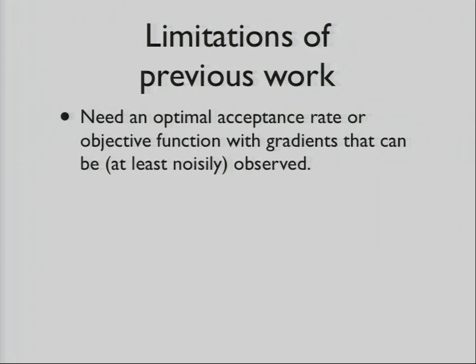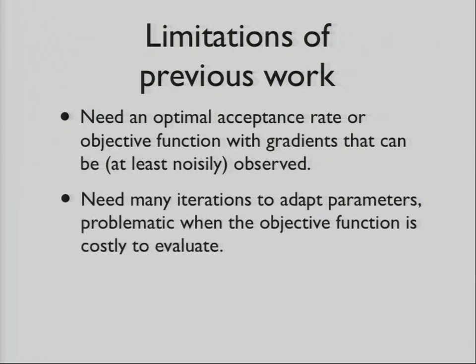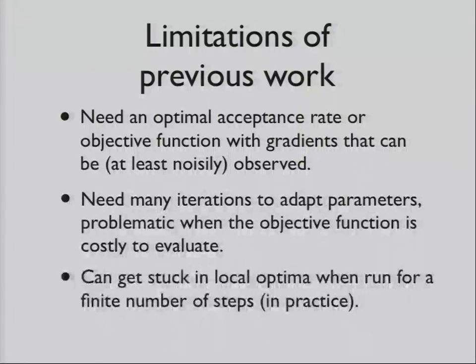There are some limitations to the previous kind of work. One of them is that you need these things like an optimal acceptance rate, or an objective function that you can compute the gradient of. Another thing is that, just like stochastic ascent, you need a lot of iterations, which can be a problem if the objective function you're optimizing over is costly. And also, you can get stuck in local optima. The other thing is that, in our case, we didn't even know what to optimize.